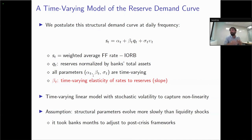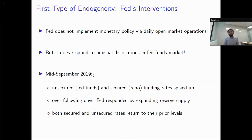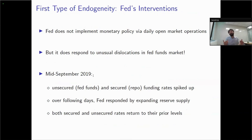The trick is using a high-frequency time-varying linear model to capture the non-linearities predicted by theory. The key assumption is that structural parameters evolve more slowly than the liquidity shocks that hit banks every day — reasonable because it took banks months to adjust to the post-crisis framework. On endogeneity: the Fed does not implement monetary policy daily via open market operations, but it does respond to unusual dislocations in the fed funds market, typically with a delay of at least a day — as with mid-September 2019 when fed funds and repo rates spiked and the Fed responded within days.